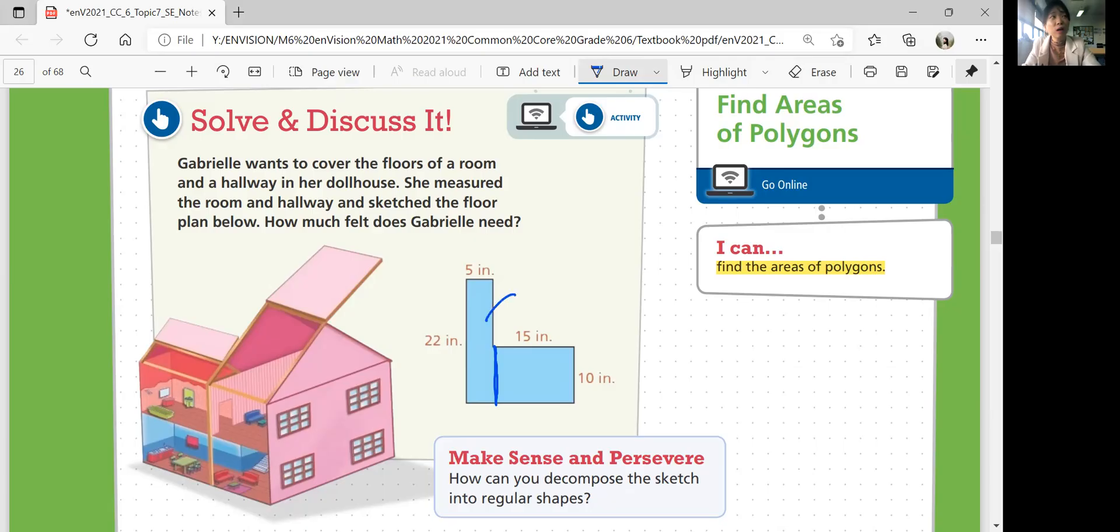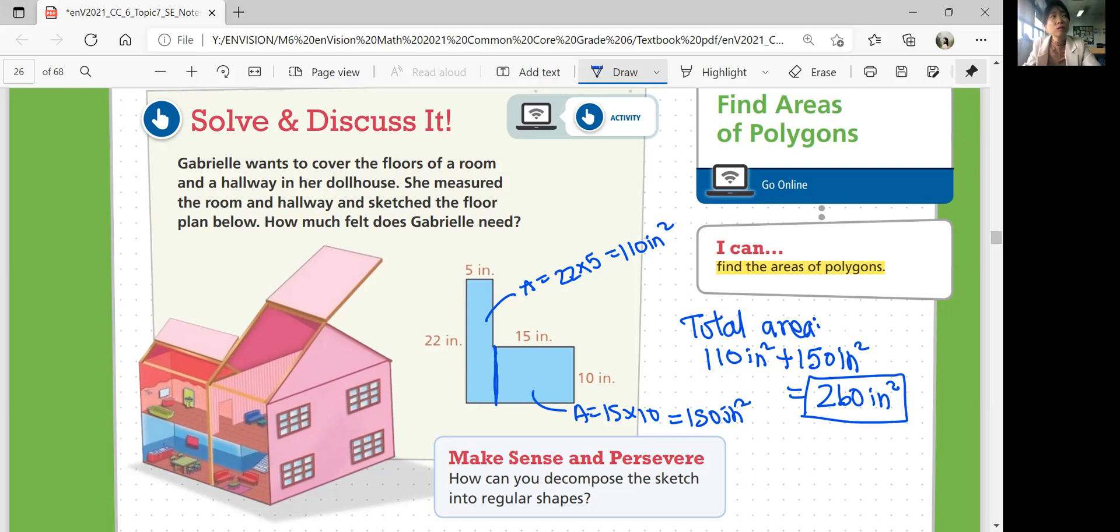So this long rectangle area would be 22 times 5. And the area of this rectangle would be 15 times 10. So then if you multiply 5 times 22, you get 110 inches square. 15 times 10 is 150 inches square. So total area would be 110 inches square plus 150 inches square, which is 260 inches.